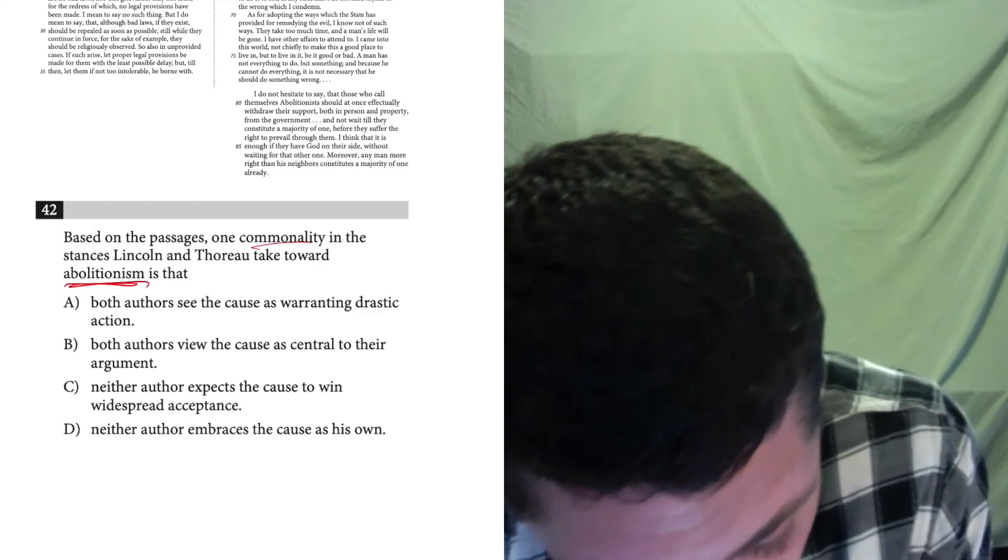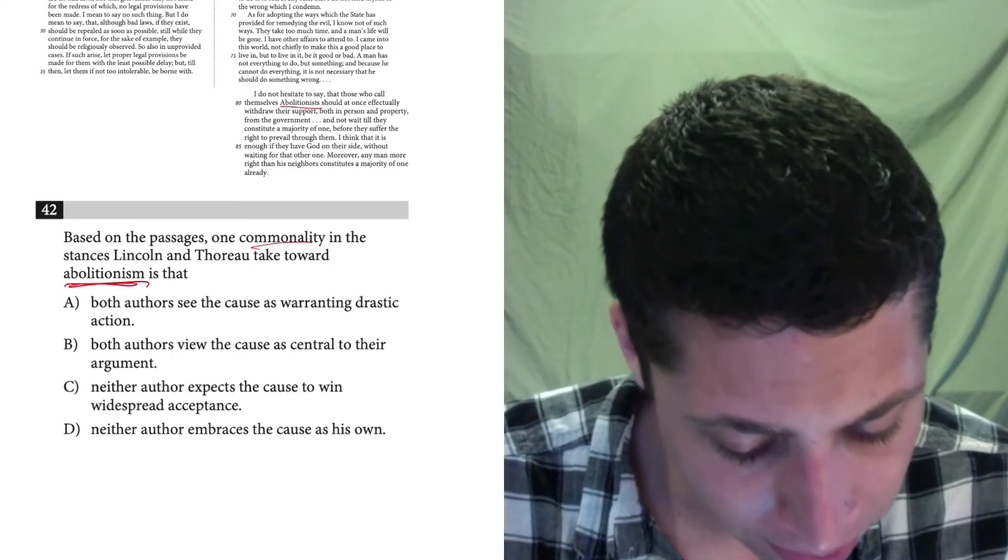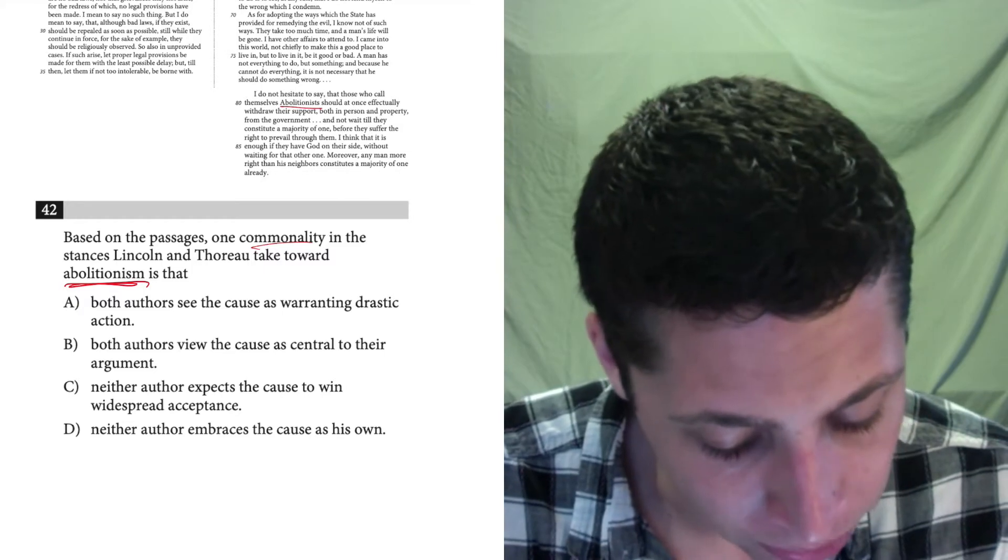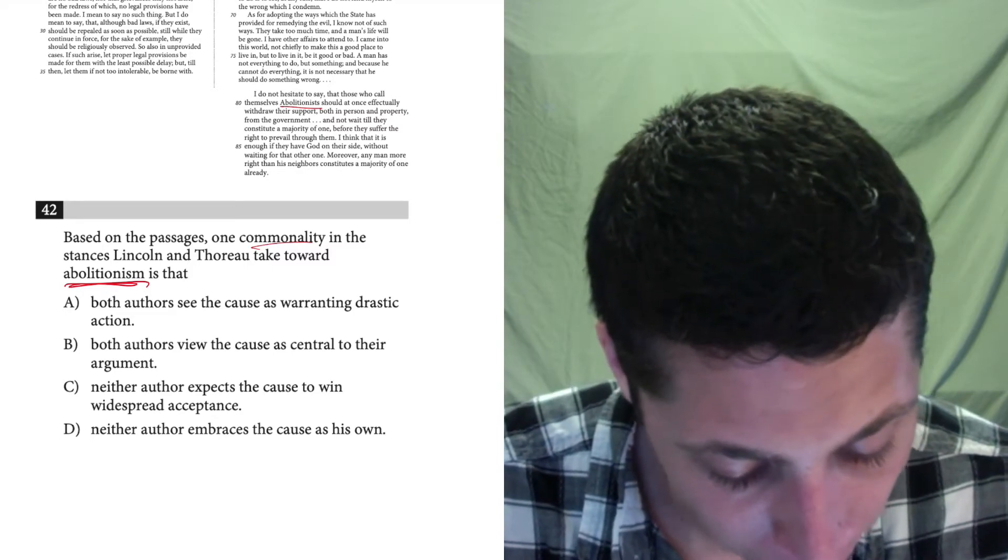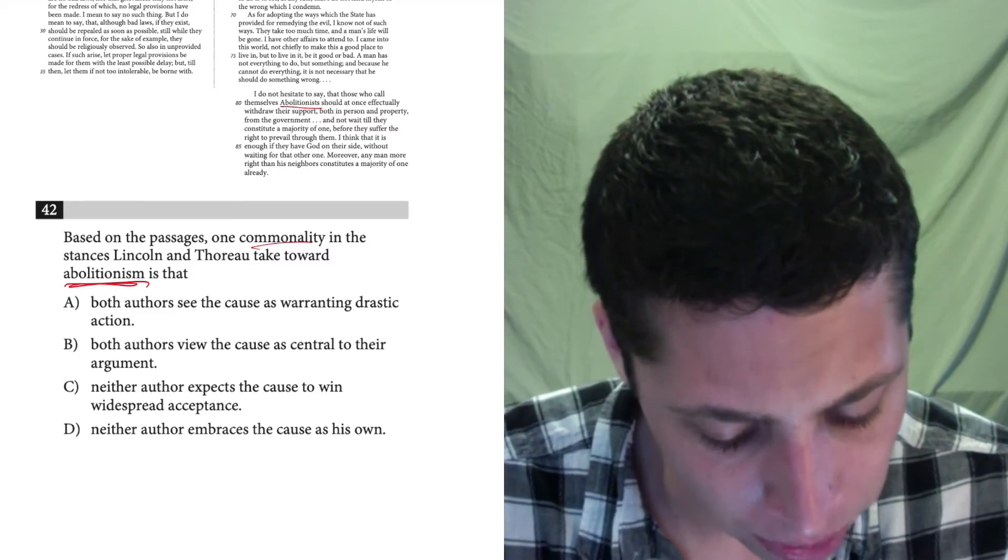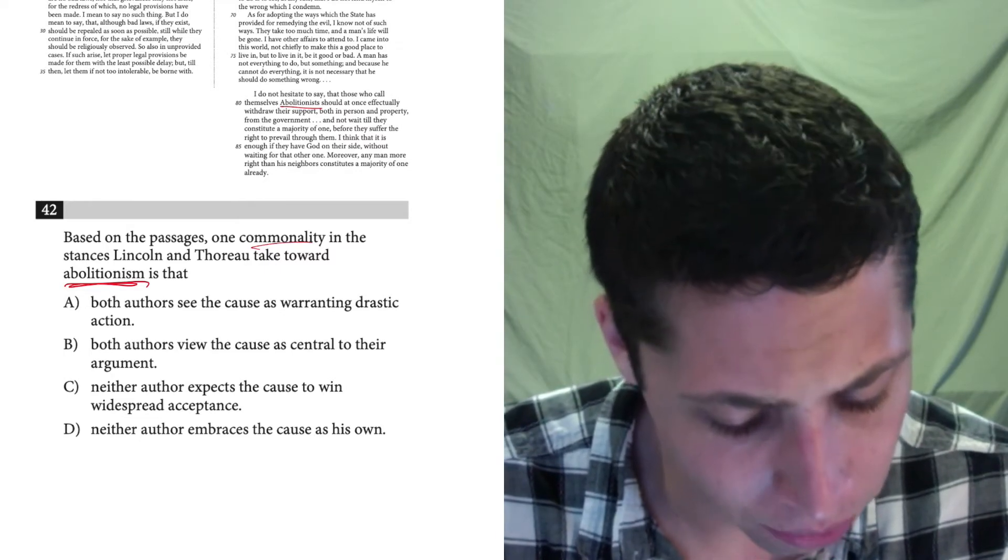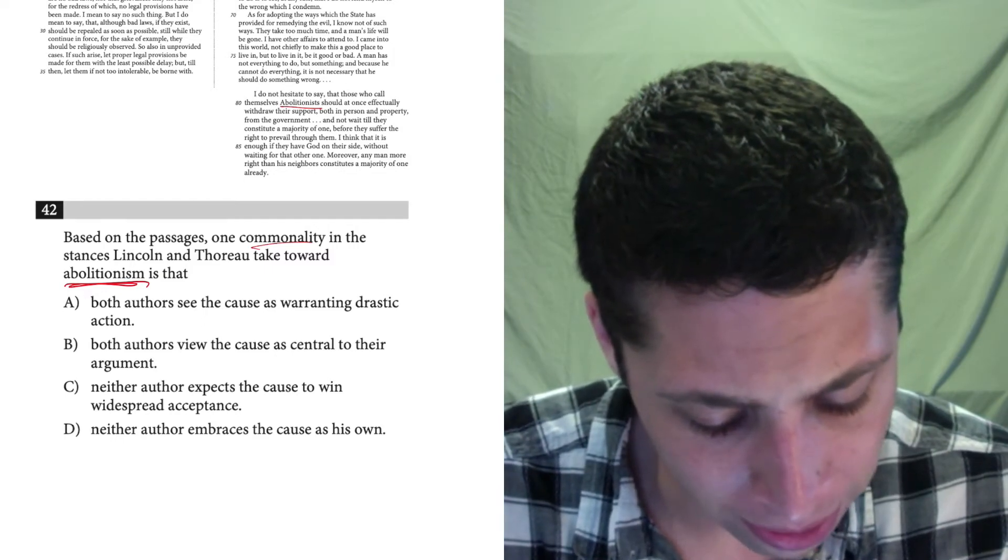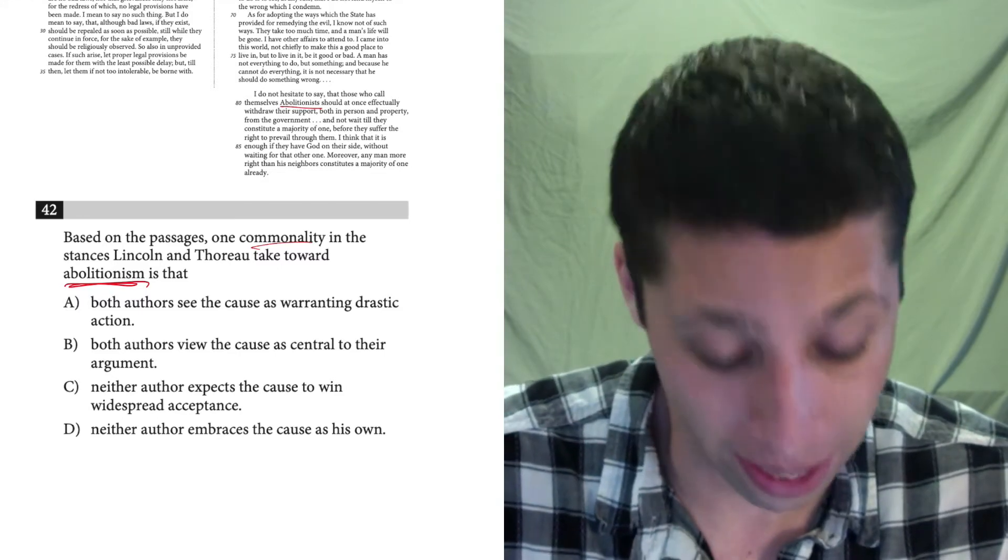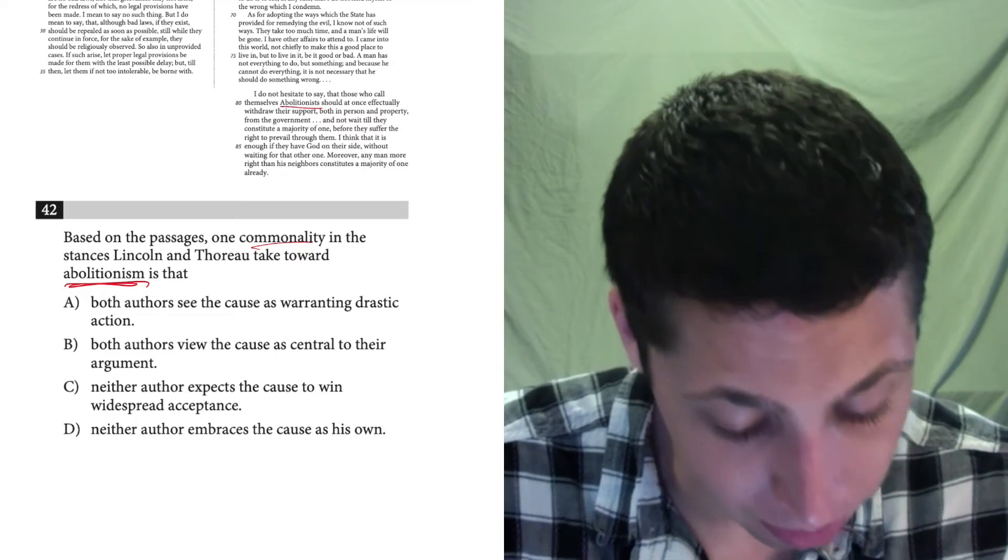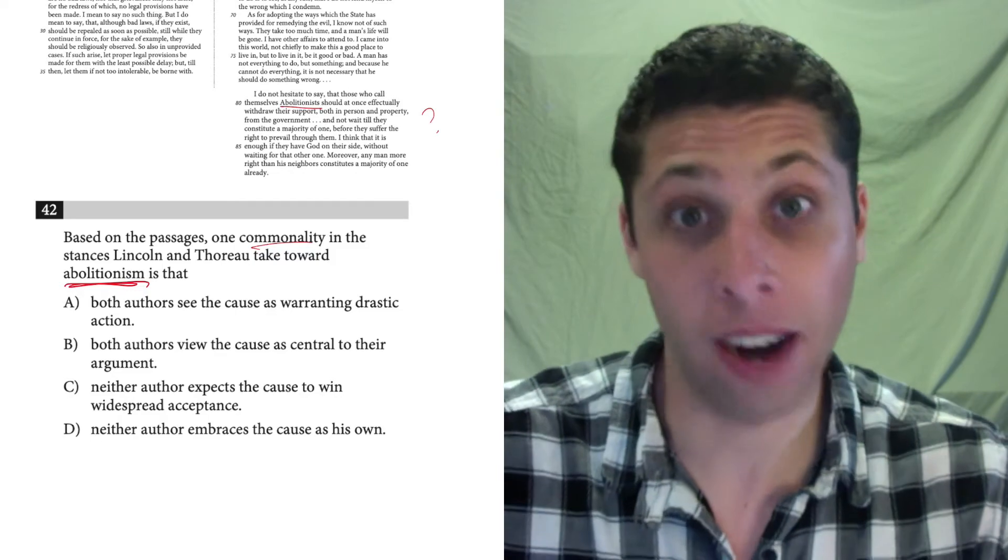And just looking up, I can see that Thoreau talks about abolitionists right at the end. So he says, I barely understood that. That's okay. I get that it's about abolitionists, he's saying something about people acting. I don't really know. I'm just going to be like, okay, I know it's there. I'll look back at it if I need to.